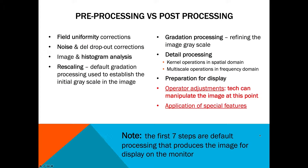Here's a great summary slide on pre-processing versus post-processing. The first seven steps — field uniformity, noise, histogram analysis, rescaling, gradation processing, detail processing, and preparing for display — are all pre-processing functions handled by the software. It's not until you get to the operator adjustments that the tech or radiologist can manipulate the image, where special features like edge enhancement and smoothing can be applied. These first seven steps are called default processing, which produces the image for display on the monitor.